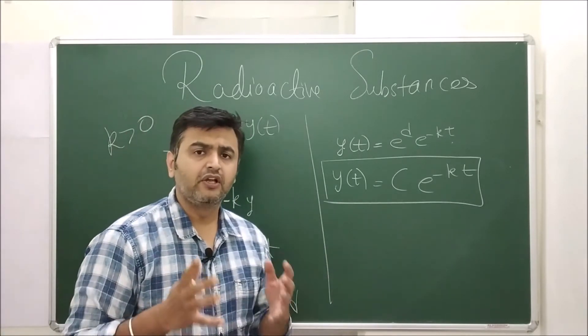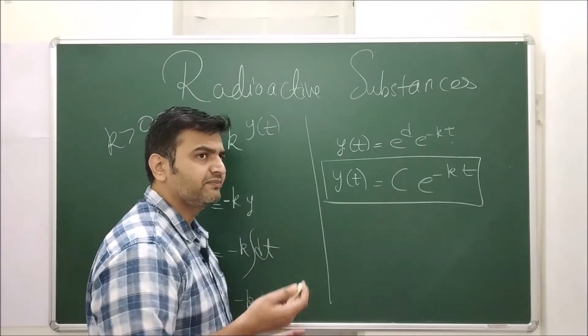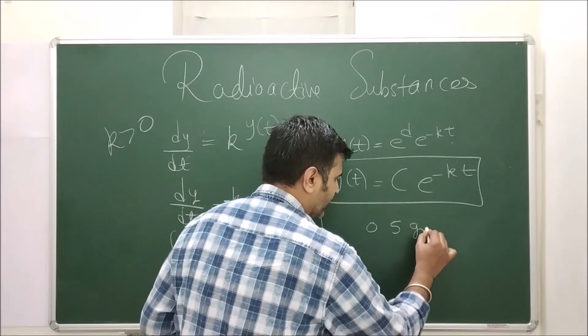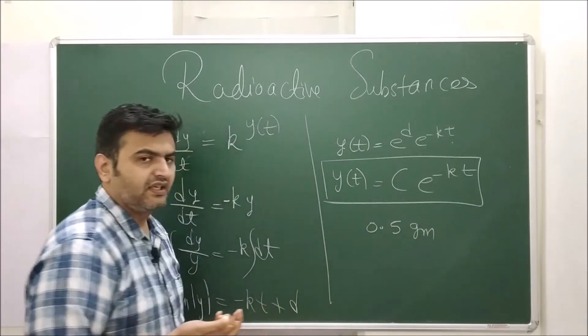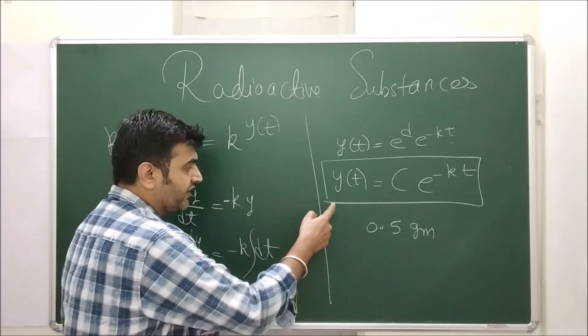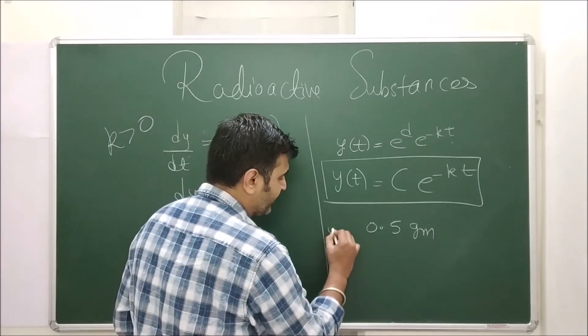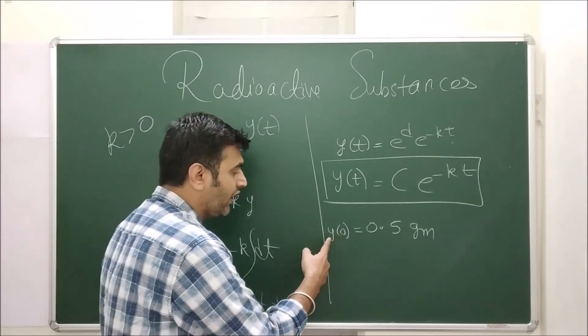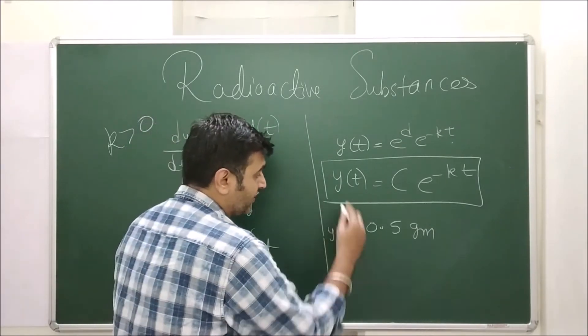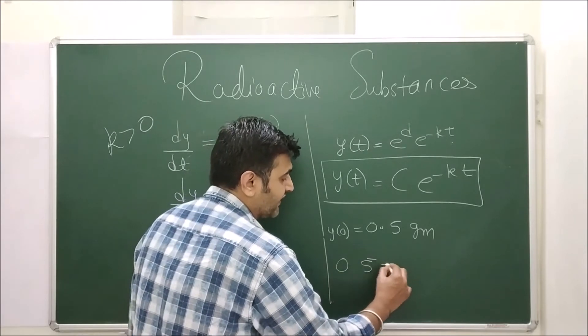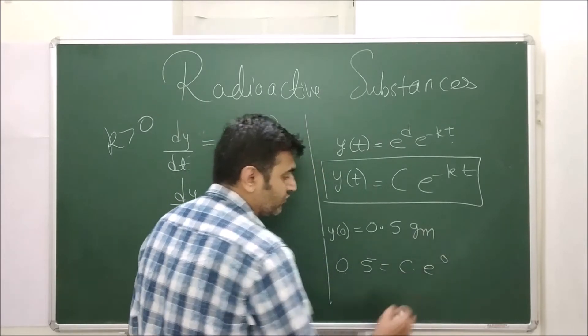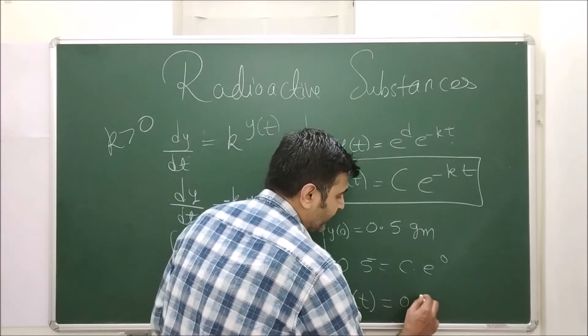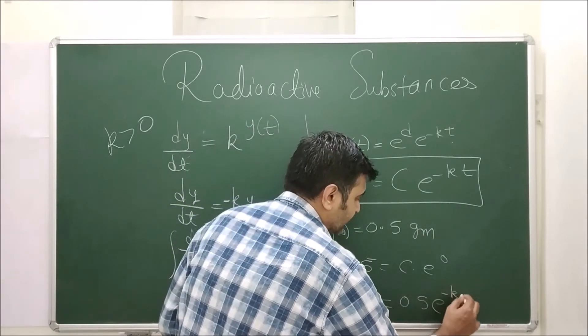Now suppose you have a radioactive substance, initially 0.5 grams. What is given to me initially is 0.5. So when time is 0, amount is 0.5. When I put this, 0.5 = c times e^0, so c is 0.5. Therefore y(t) = 0.5e^(-kt).